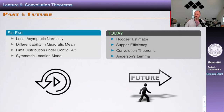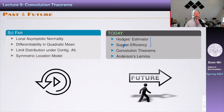We're going to think about what it means to say that an estimator is 'good.' This will quickly lead us to Hodges estimator, which I'll go over in more detail. We're going to talk about super efficiency, and once we realize that this presents challenges, we'll see how to answer those questions. The answers will be given by two so-called convolution theorems. Combined with Anderson's Lemma, that's the roadmap.